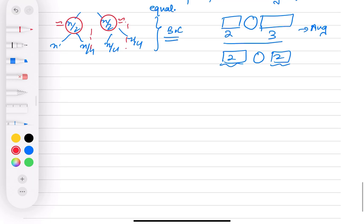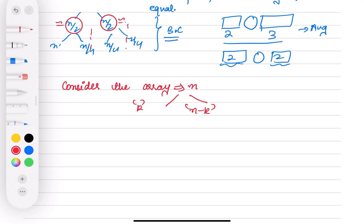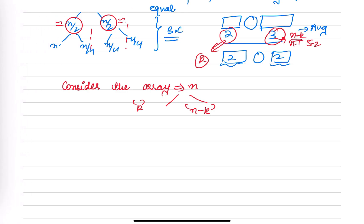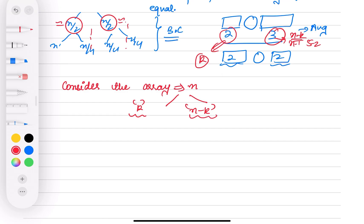We'll consider an array of size n which gets divided into two parts: k and n minus k. For example, if total array size is 5, one part is k=2 and the other is n minus k = 3. So your array gets divided into k and n minus k.